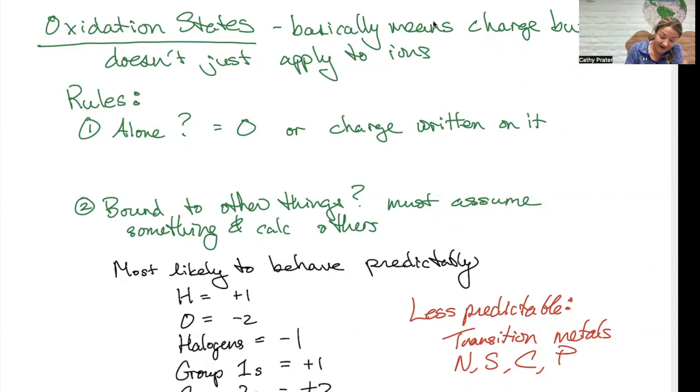So for example, if I was dealing with something like ClO with a negative one charge, I have to figure out what oxidation state chlorine has and what oxidation state oxygen has.